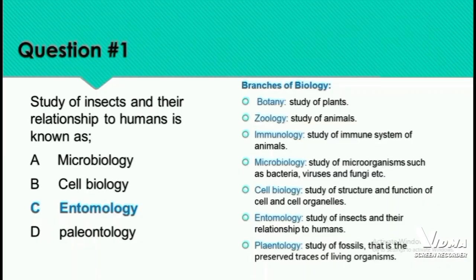Our first question is: the study of insects and their relationship to humans is known as? The options are Microbiology, Cell Biology, Entomology, or Phelanthology. These are all branches of biology. In a paper, there was a question to list any 10 or 15 branches of biology. You should understand which branch is concerned with which study.